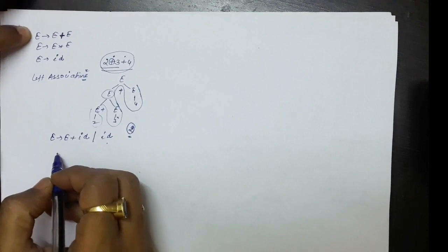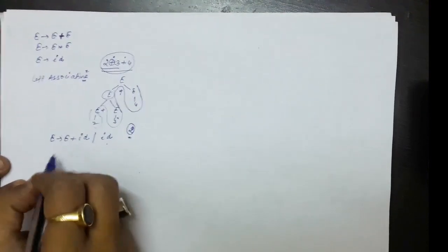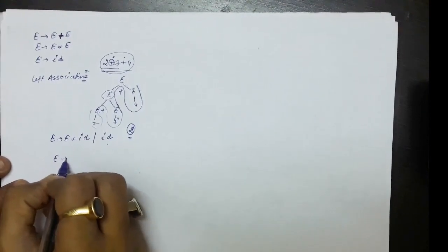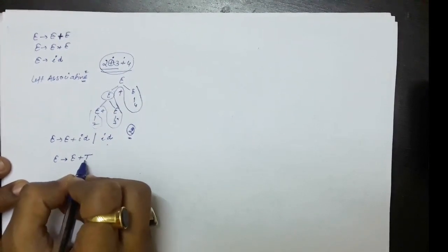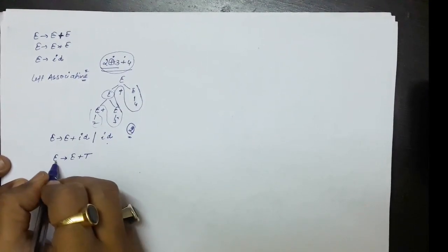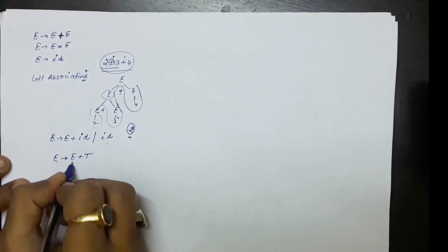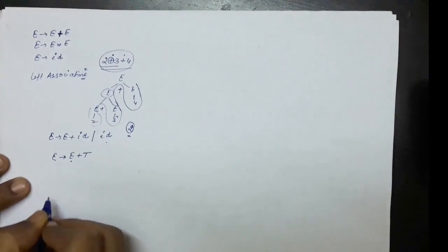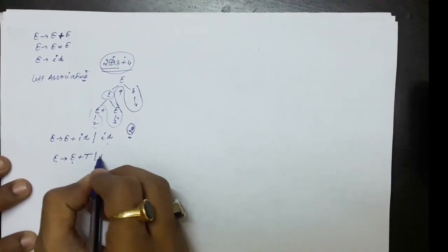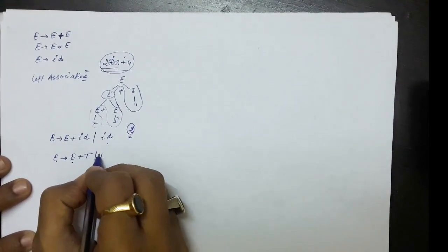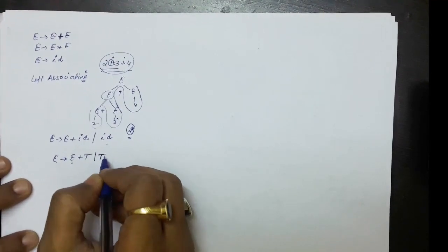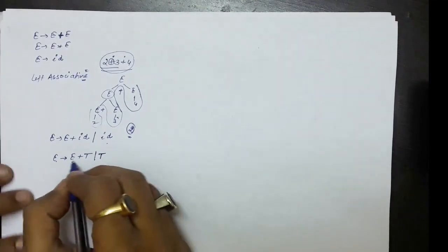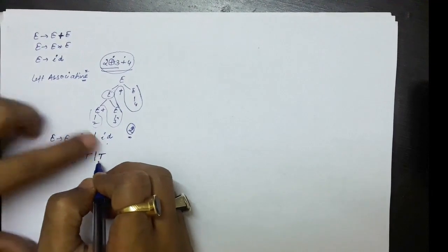Since we have both plus and multiplication, we write E produces E plus T. If the string does not have any plus symbol, we can move directly to multiplication. So E produces T, wherein T produces T star F.